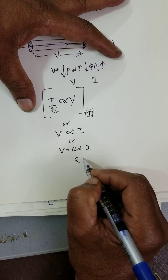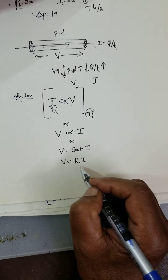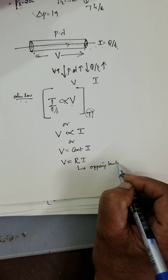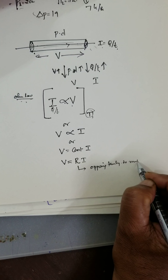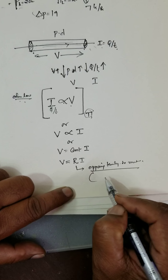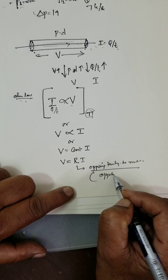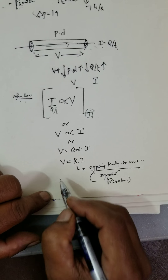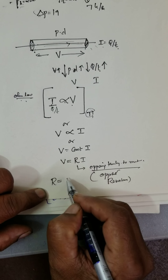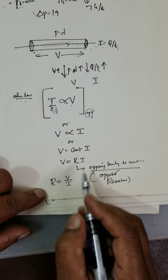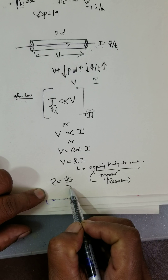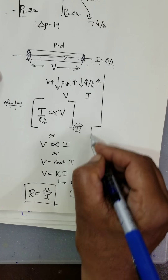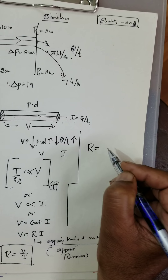The constant is denoted by R, where R is the opposing tendency of the metal. This opposing tendency of the metal is also called opposition or resistance. Therefore, resistance of the conductor is equal to V divided by I — it is the ratio of potential difference between the ends of the conductor to the current flowing through it. This is how we define resistance.